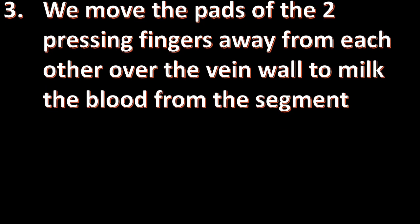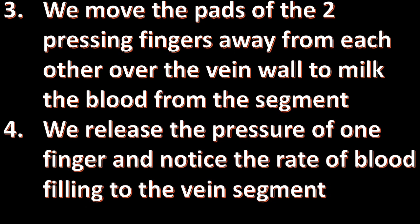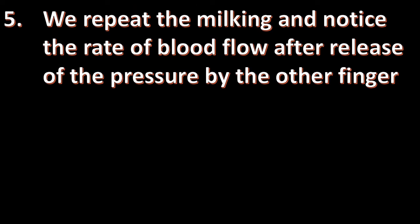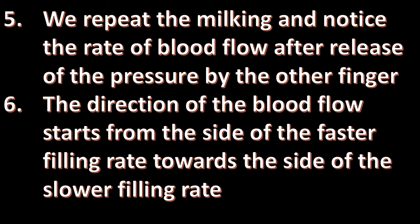We move the pads of the two pressing fingers away from each other over the vein wall to milk the blood from the segment and empty it of blood. We then release the pressure of one finger and notice the rate of blood filling into the venous segment. We repeat the milking and notice the rate of blood flow after releasing the pressure of the other finger. The direction of blood flow starts from the side of the faster filling rate towards the side of the slower filling rate.